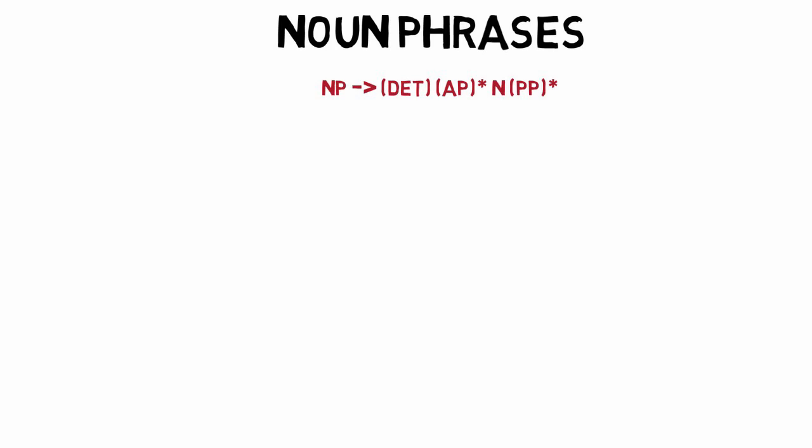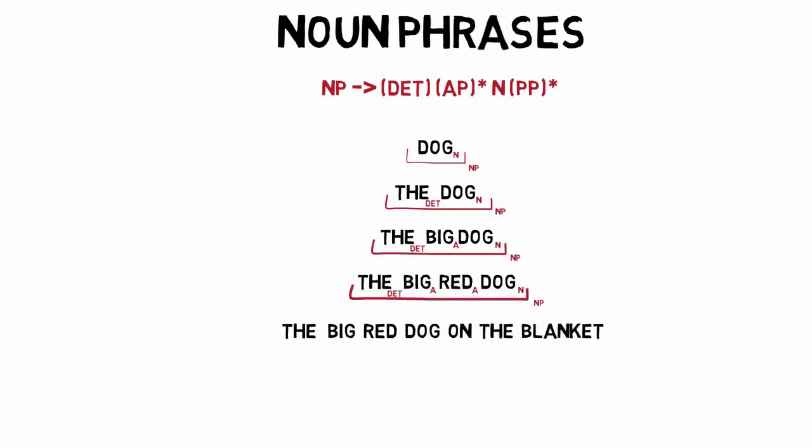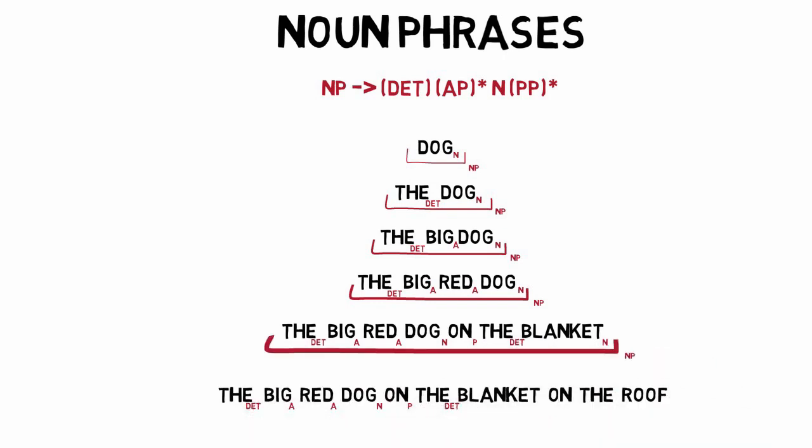This grammar can generate any of the following sentences or phrases: dog, the dog, the big dog, the big red dog, the big red dog on the blanket, or the big red dog on the blanket on the roof. Note here in this last one that there are two prepositional phrases, just as there are two adjective phrases.